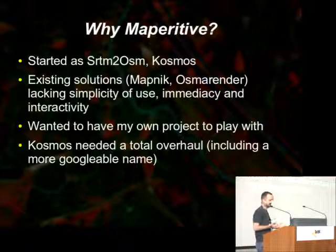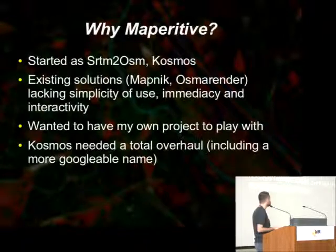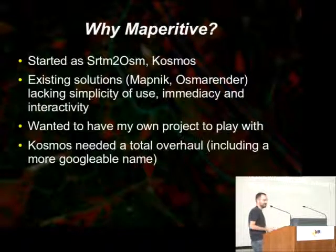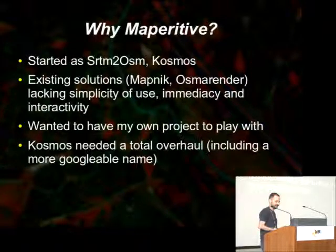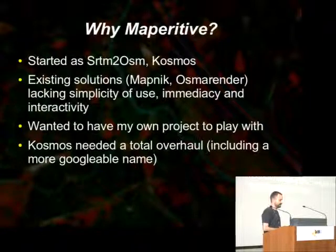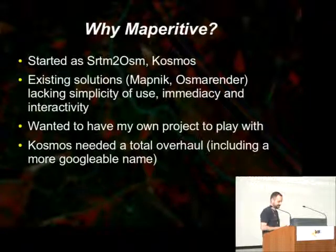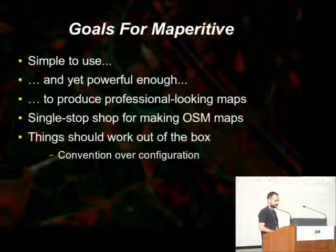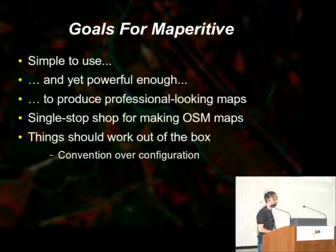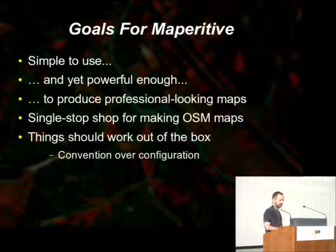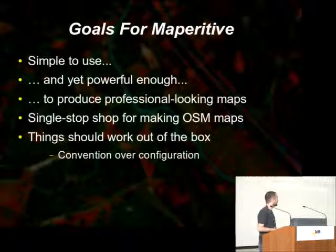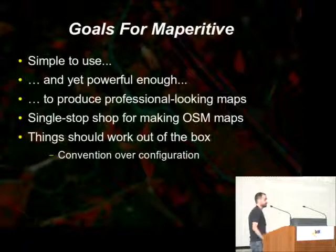Then I decided if I had to change all of that, I could also change the name and give it something that, when searching Google, I would get the first results to the homepage — which Cosmos wasn't. So the goals for imperative: first of all, it should be simple to use, and yet it should be powerful enough to render professional-looking maps.